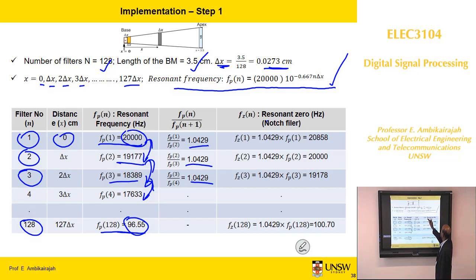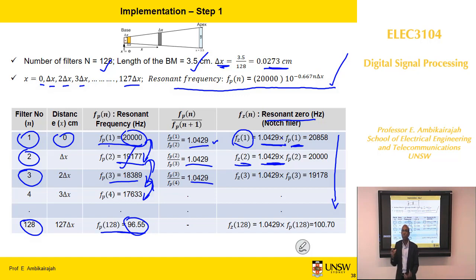And then we need to get the resonant zero which is the notch filter. How do you do that? As I said to you, we are going to get the one and keep it fixed. Fz equal to 1.0429 times the fp1. So take the fp1, fz1 is 1.05. Similarly, fz2 is 1.049 times fp2 value. So this is how you get the zero values. These are for hand calculation checking to make sure your program is right.